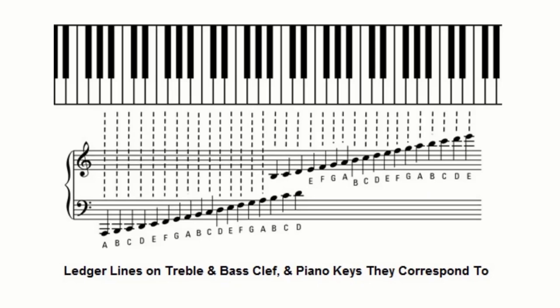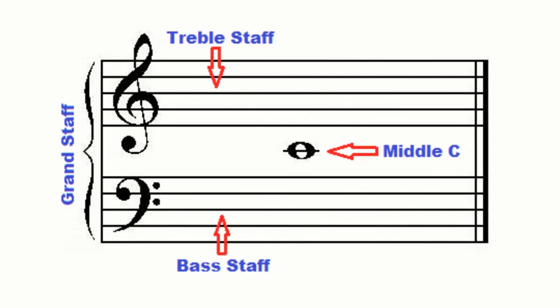These short lines are spaced at the same distance as the lines of the staff. Ledger lines are nothing more than a continuation of the staff. Middle C is the note halfway between the bass clef and the treble clef.